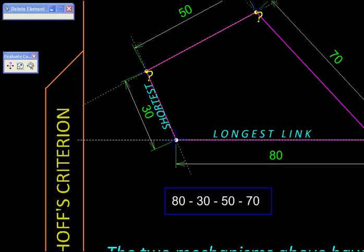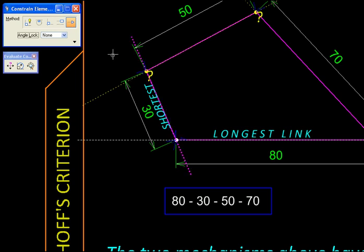And we will fix the direction of our smallest link, so it is fixed at this point and this direction is fixed. Let's hide the construction.